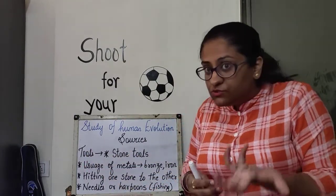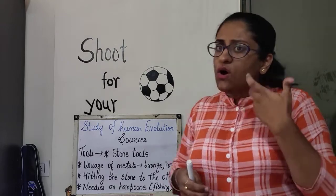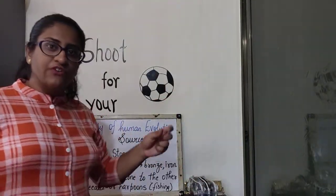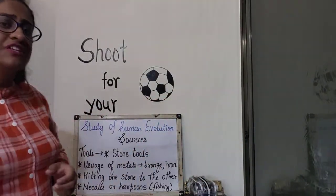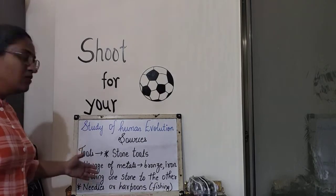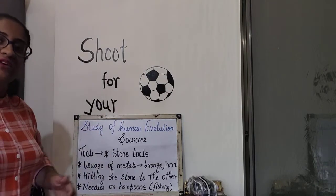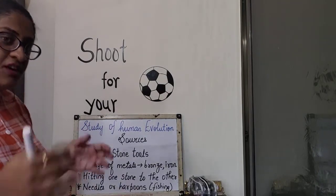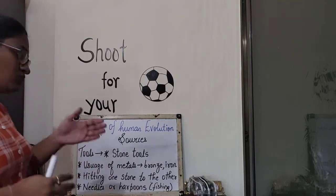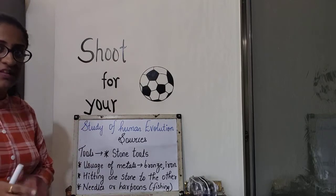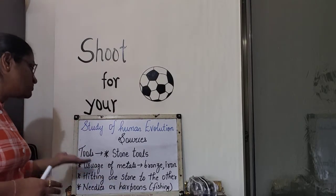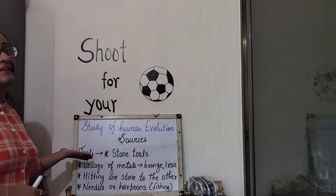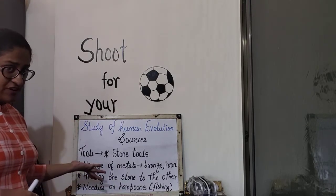Looking at the advancement of tools, the tools we use today are all made of iron, with different levels of sharpness, and are all machine-activated. There have been significant technological inventions along the way, so the tools we use now and the tools early humans used were completely different.